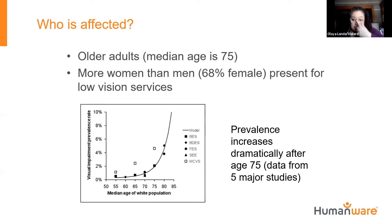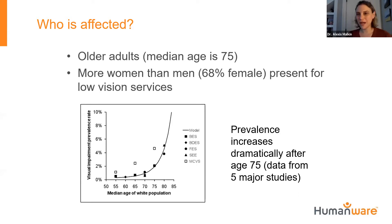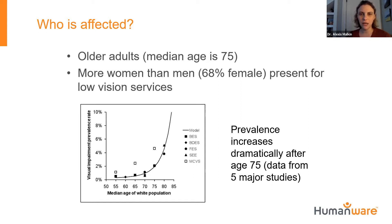A question: is the 20/100 definition for blindness without correction? The 20/100 is based on the best corrected vision in the best seeing eye. Legal blindness also includes a visual field definition: less than 20 degrees of visual field in the best seeing eye.